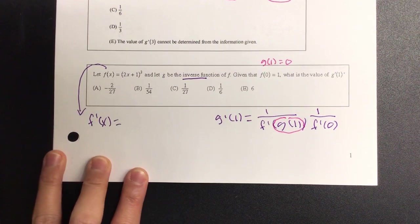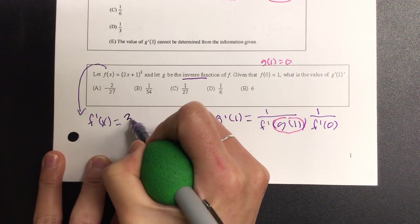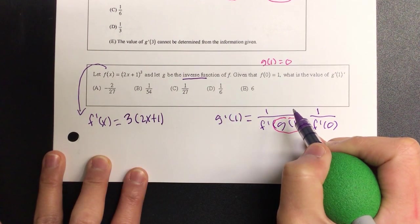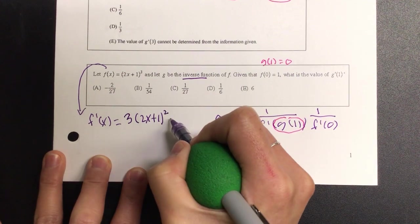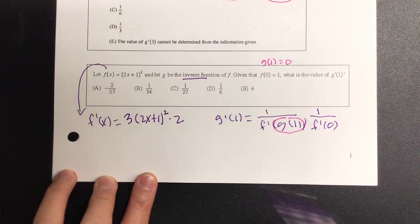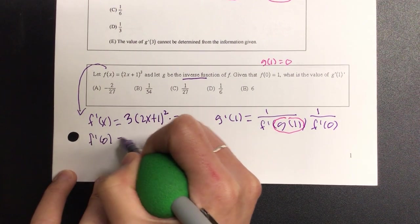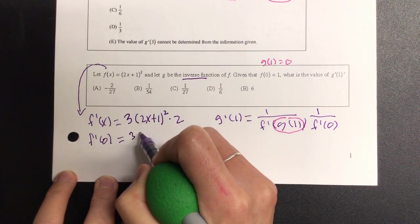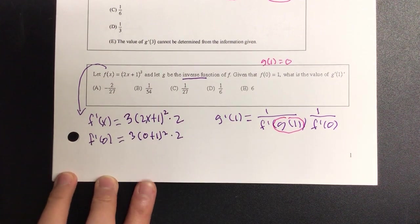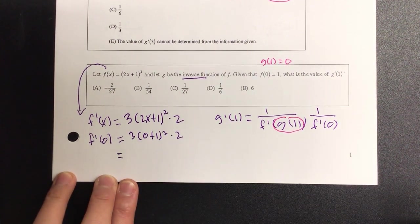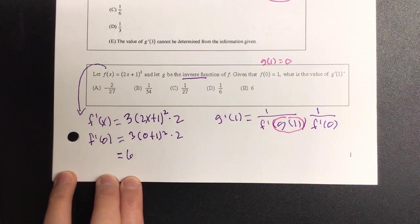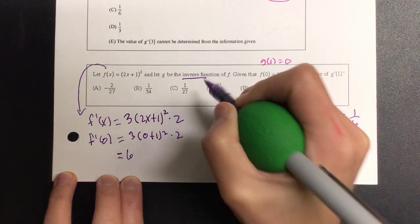And that's going to be our chain rule. So a reminder on the chain rule is, bring the power down, keep the inside as it is, 1 less the power, and then we derive the inside, which is times what? 2. And at this point, all I need to do is plug in the 0. So f'(0), that's going to give us 3 times (0 + 1) all squared times 2. So how many would that give me? Because 0 plus 1 is 1. 6. So our final answer will be 1 over 6, which is D.